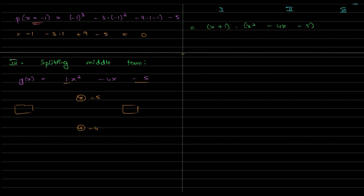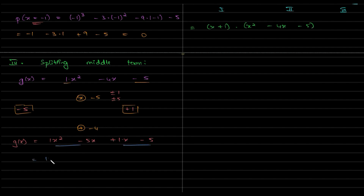We need two terms which when multiplied give minus 5 and when added give minus 4. The factors of 5 are plus or minus 1 and plus or minus 5. We go with minus 5 and plus 1: minus 5 plus 1 equals minus 4. So g(x) = x² minus 5x plus 1x minus 5. Taking x common from the first two gives x(x − 5), and taking plus 1 common from the last two gives 1·(x − 5).